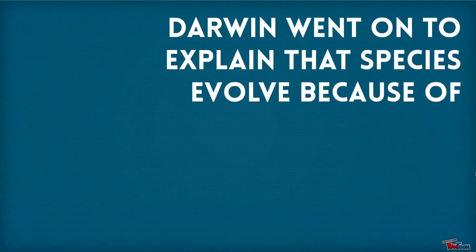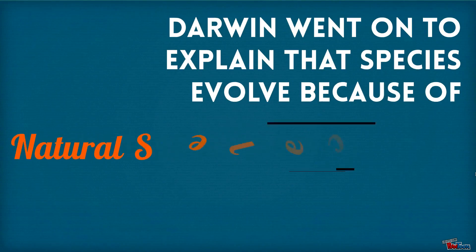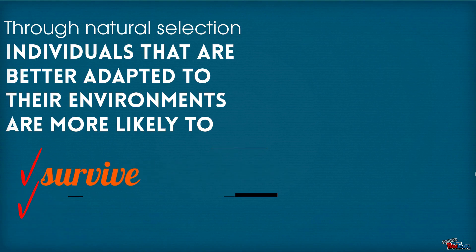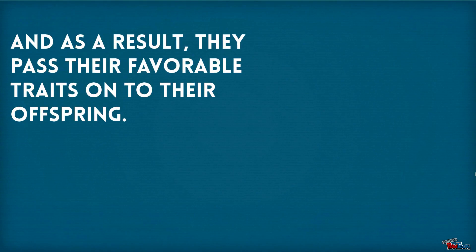Darwin went on to explain that species evolved because of natural selection. Through natural selection, individuals that are better adapted to their environments are more likely to survive and then reproduce. As a result, they pass their favorable traits on to their offspring.